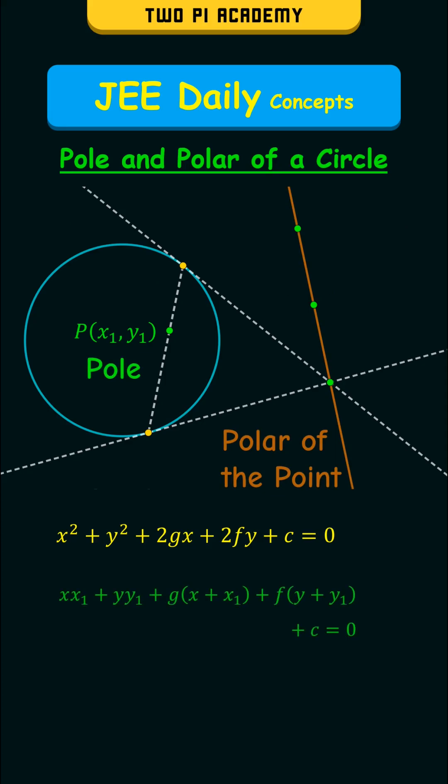And the equation of the polar is given by x x1 plus y y1 plus g(x plus x1) plus f(y plus y1) plus c is equal to 0.